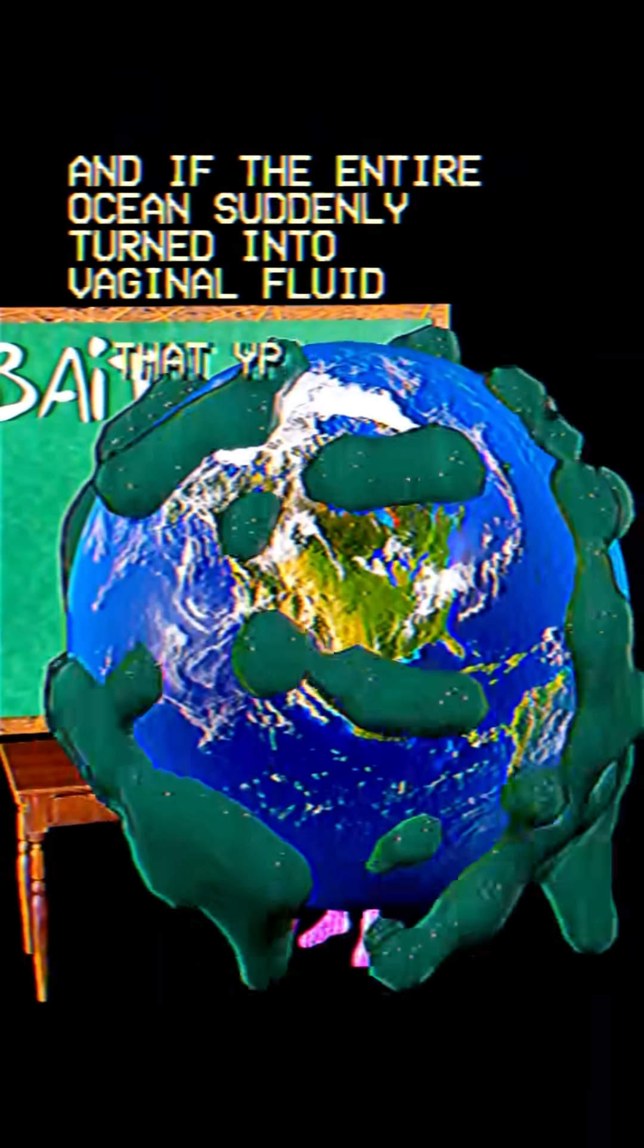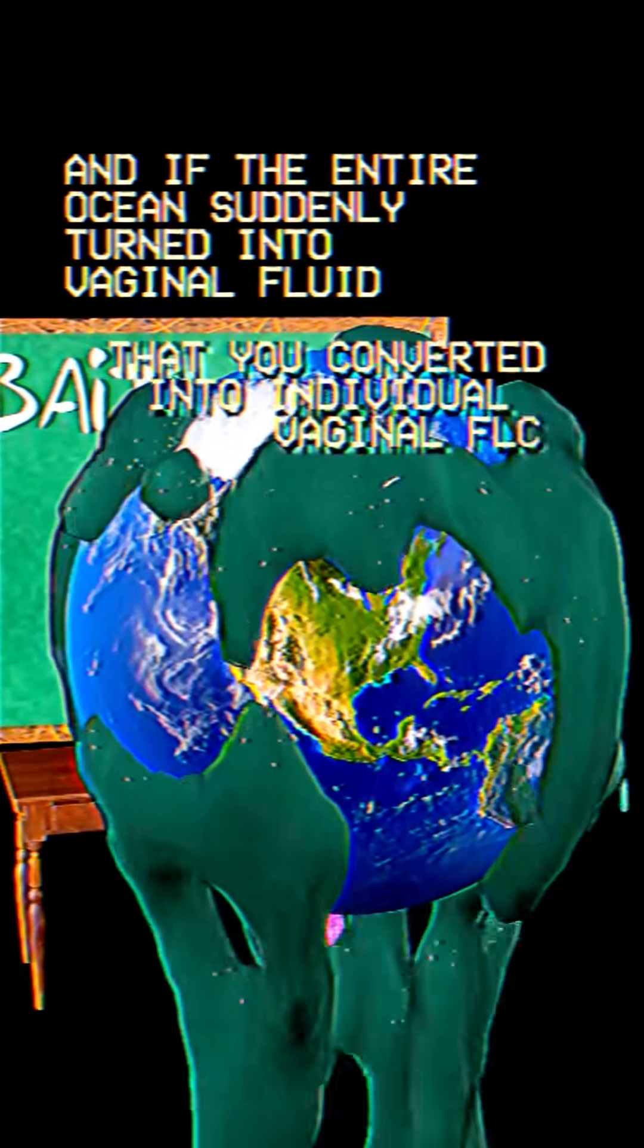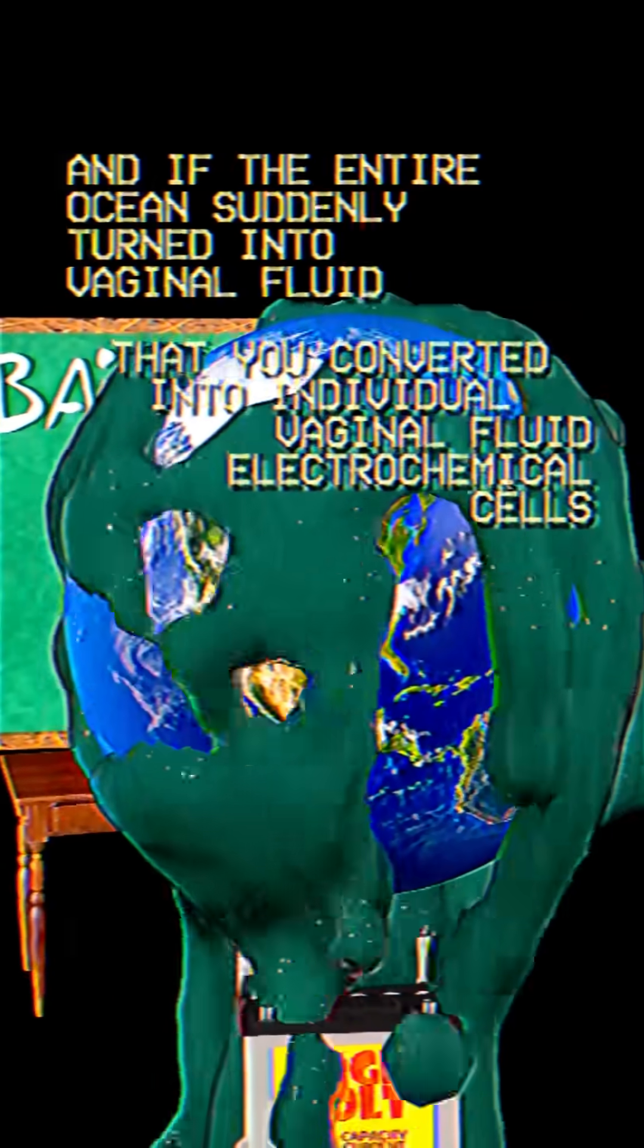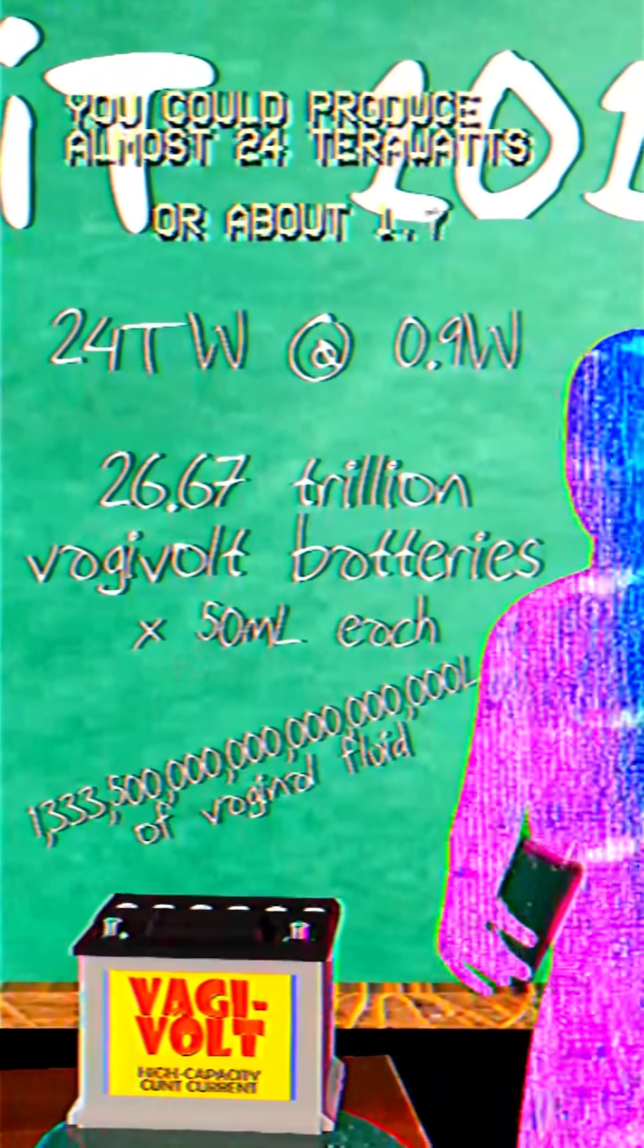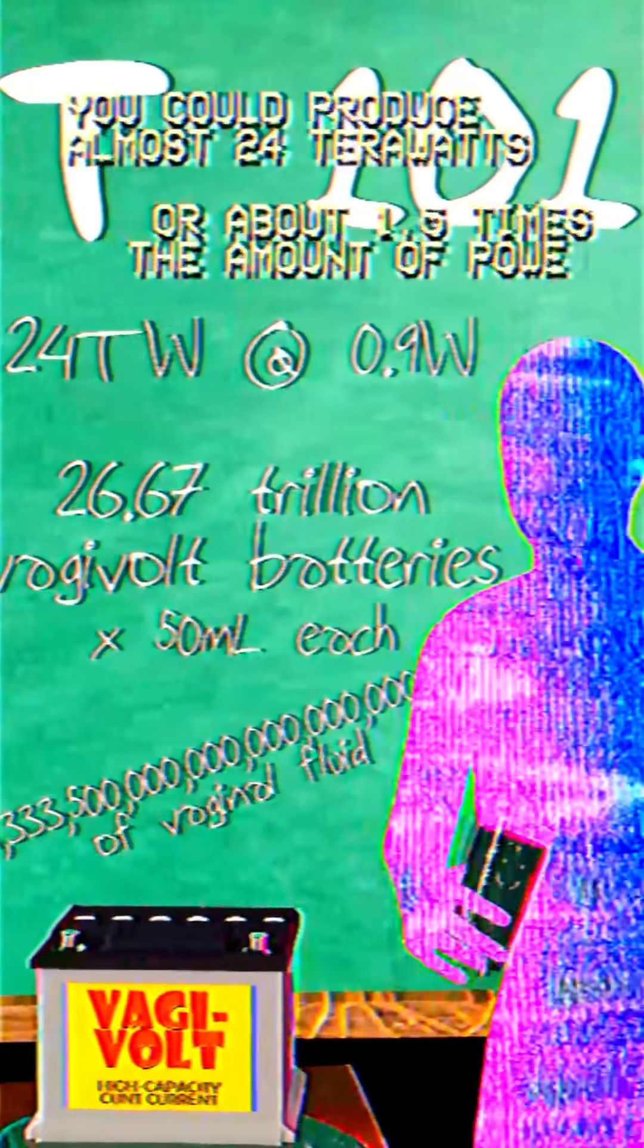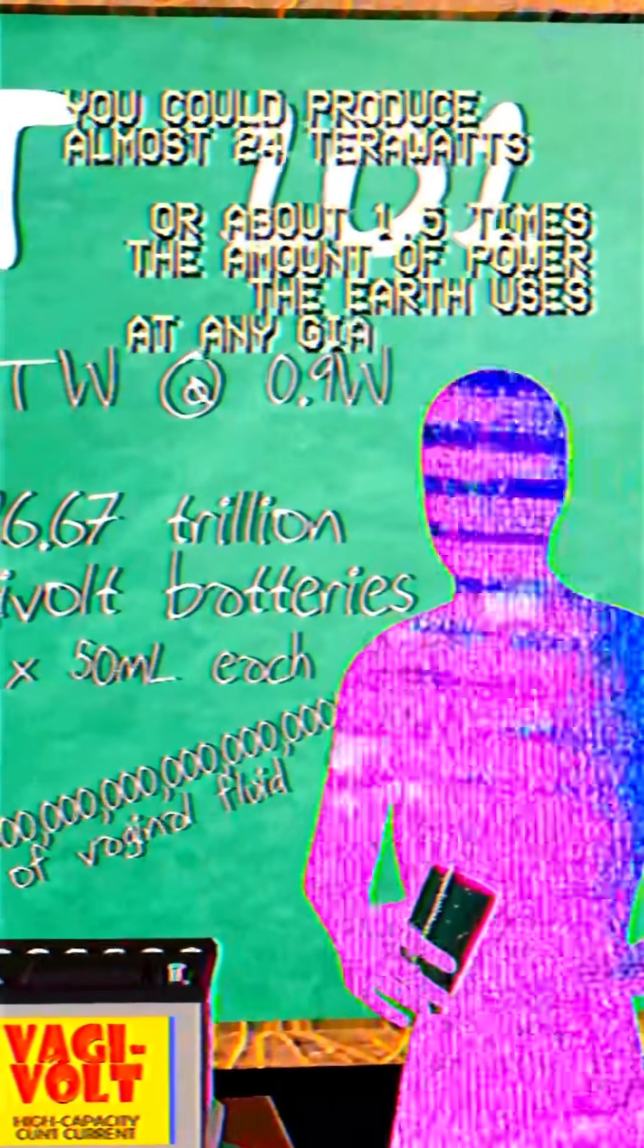And if the entire ocean suddenly turned to vaginal fluid that you converted into individual vaginal fluid electrochemical cells, you could produce almost 24 terawatts, or about 1.5 times the amount of power the Earth uses on any given moment.